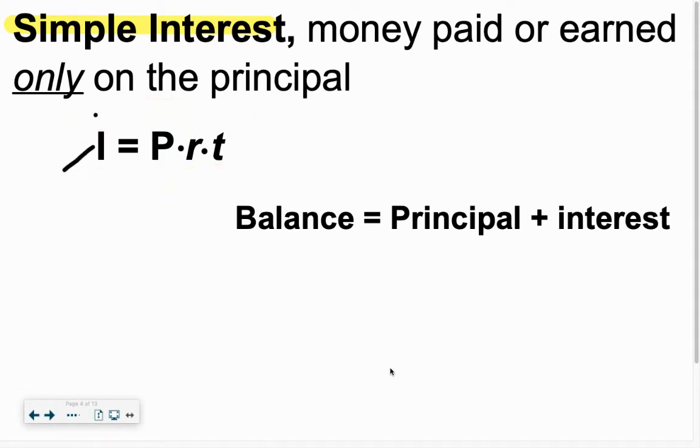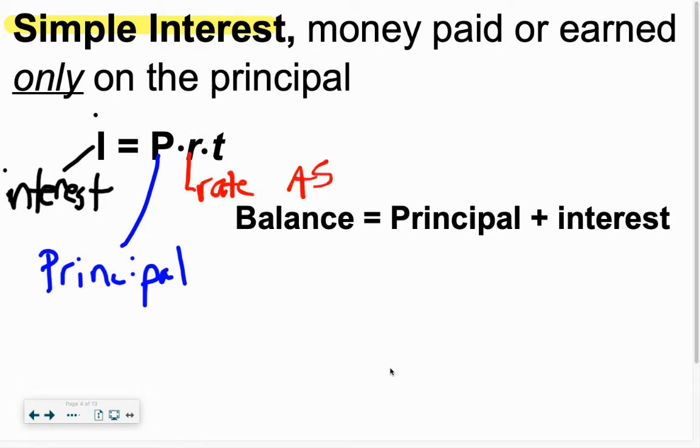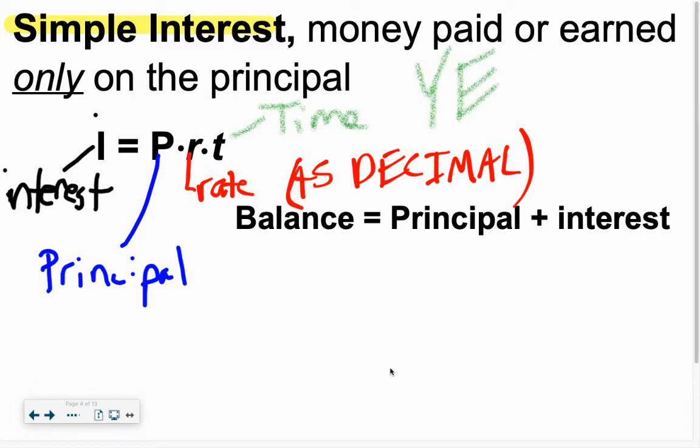We're going to use it every time. The letter I stands for interest, the interest earned or the amount that we're going to pay. Then we've got that letter P, capital P, the principal, the amount of money you start with. Then you have your rate, which is a percent as a decimal. And then you've got time, which needs to be in years. If it's not in years, we need to fix that. We will make it in years.